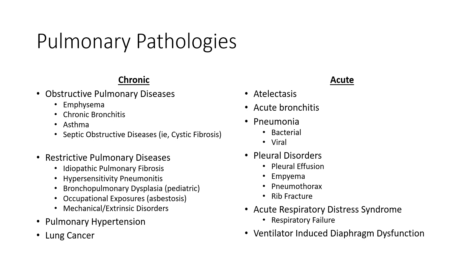In terms of pulmonary pathologies, these are the ones we're going to cover in this course. We're going to focus in this lecture on the chronic cases, with an emphasis on obstructive defects, restrictive defects, pulmonary hypertension, and lung cancer. In the following lecture, we'll cover our acute conditions. This is not an exhaustive list, but we're going to cover some of the major ones you'll see in clinical practice.